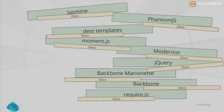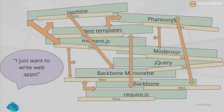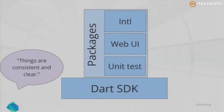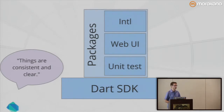Each one of these has a different set of docs, hosted on different sites in different formats. He has to integrate all this stuff and make it work together, which is worse than it sounds because there's duplicate functionality — he has to decide, do you want the collections library from library A or library B? After all of that, he just wants to write web apps. He was happy to report that he found Dart and replaced that teetering pile of technologies with simply the Dart SDK and three packages. Things are consistent and clear.